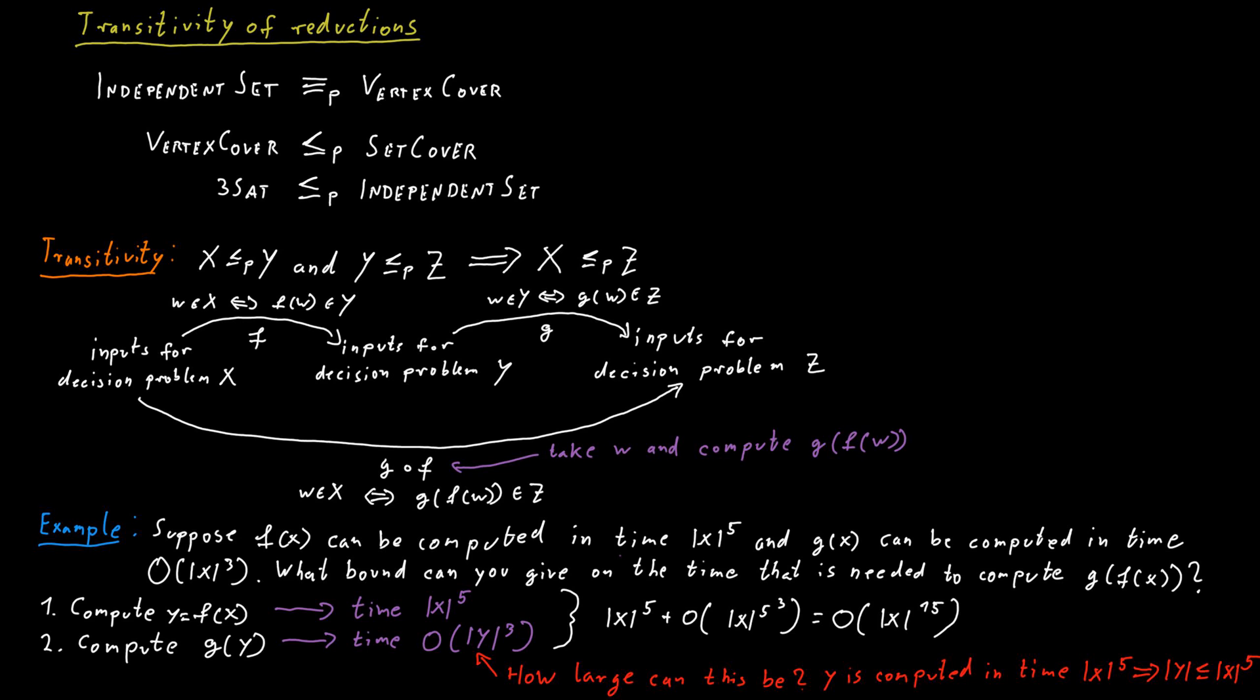So in practical terms, you probably don't want to chain too many of these reductions together. And maybe if you want to reduce some problem X to some problem Z, you don't want to do this in a very indirect way. If you want to use this in practical algorithms, you want to have a relatively direct reduction between the two problems.